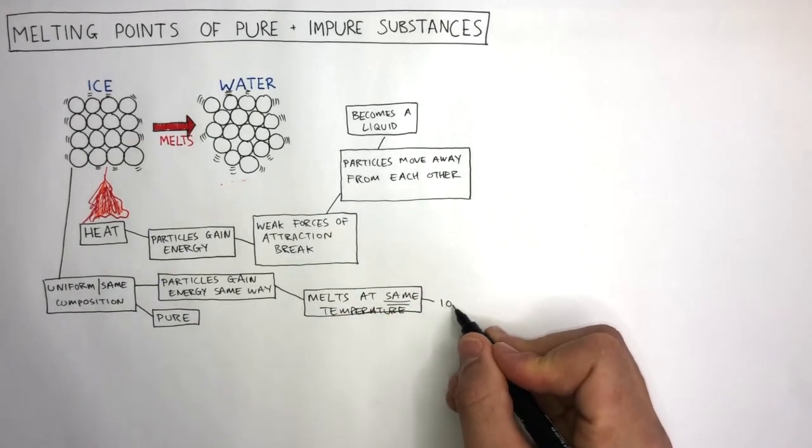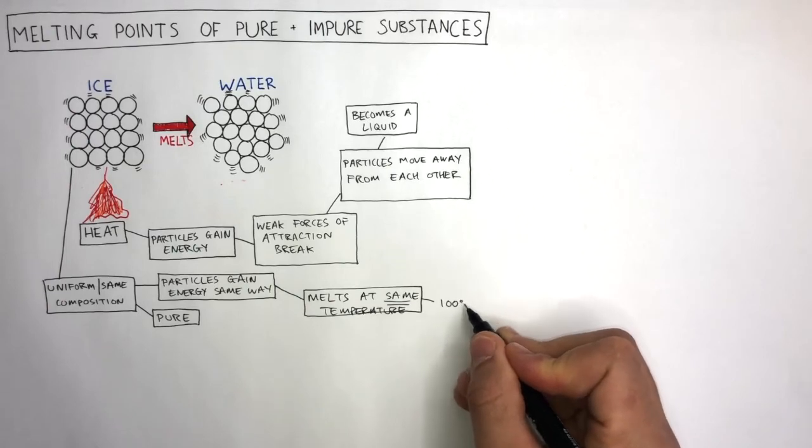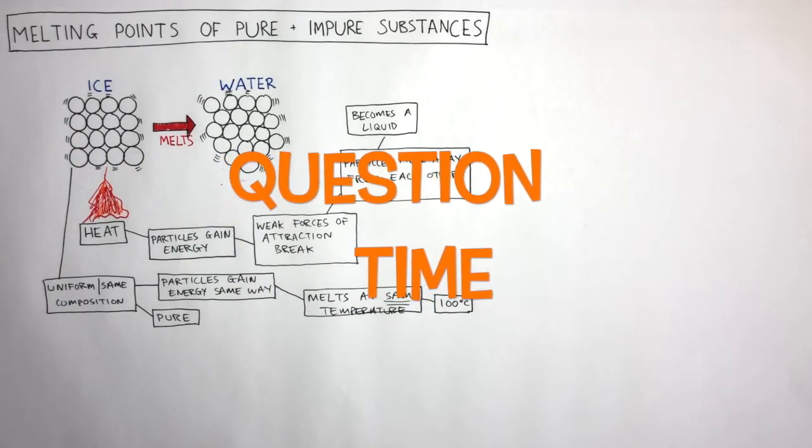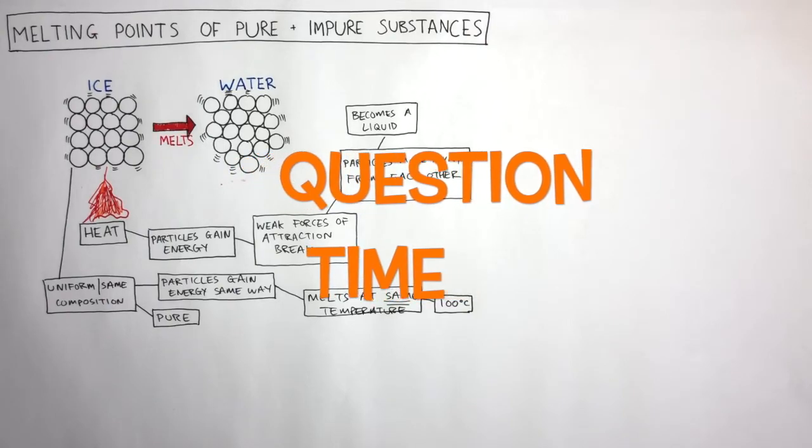100 degrees C is actually the boiling point of water, not the melting point. It's question time. Attempt these questions to check your understanding.